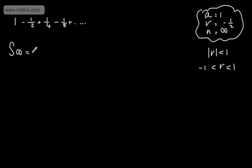We've got the sum to infinity is going to be a, which is 1, over 1 minus -1/2. So we're going to do 1 over 1 minus -1/2, which is going to give us 1 over 3/2, which is going to give us 2/3.